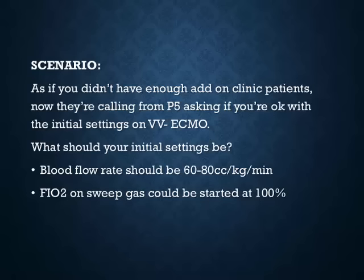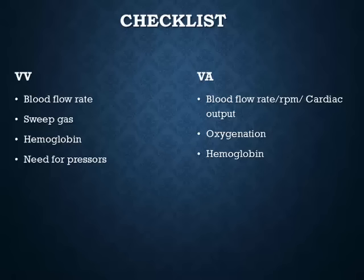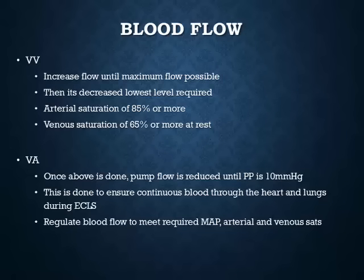For initial VV ECMO settings: blood flow rate should be around 60–80 cc/kg/minute. FiO2 on sweep gas can start at 100% and be titrated down. What you really want to monitor closely is carbon dioxide levels. The quick checklist for VV ECMO includes: blood flow rate, sweep gas, hemoglobin, and need for pressors. For VA ECMO: blood flow rate, oxygenation, and hemoglobin.